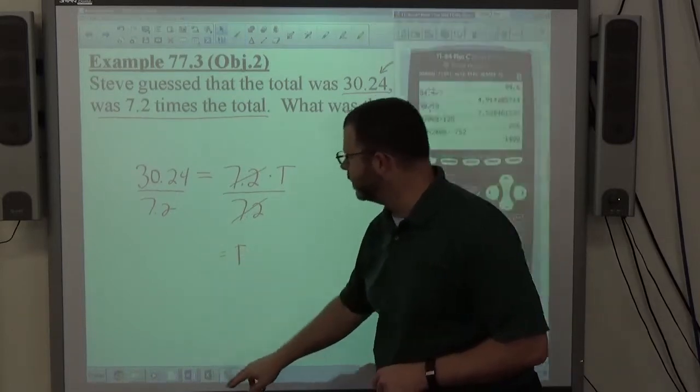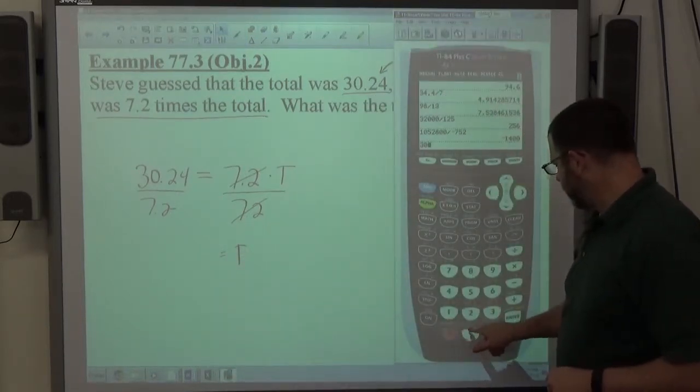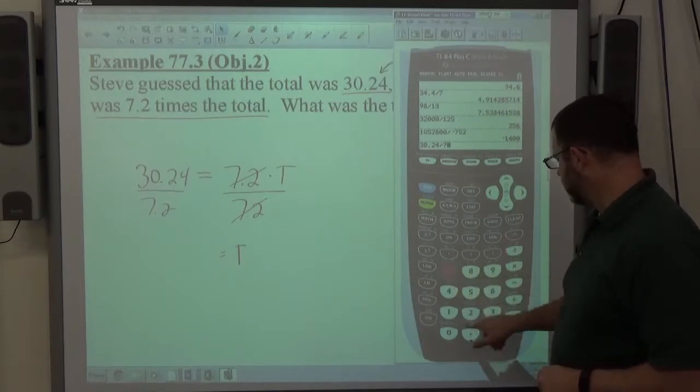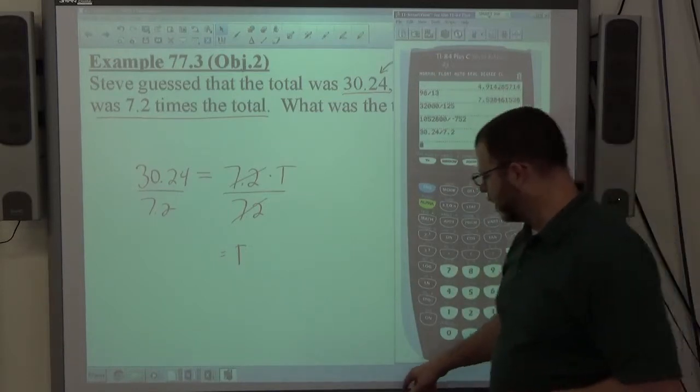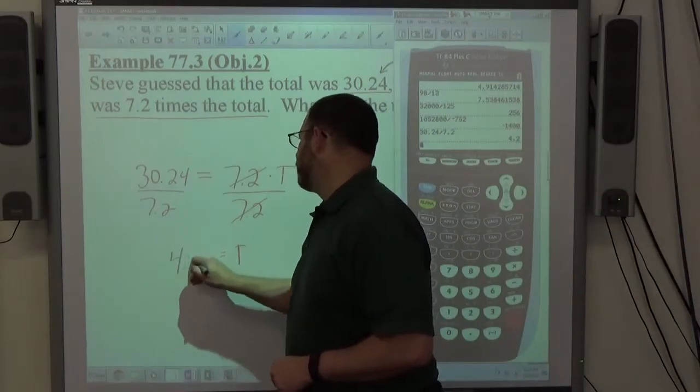Your guess is as good as mine. 30.24 divided by 7.2 is 4.2. Amber's guessing better than mine. 4.2.